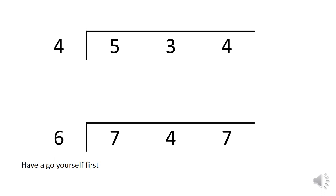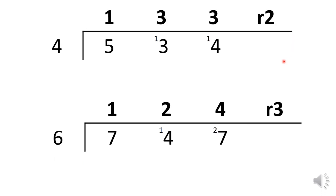Have a go at these two questions by yourself and take a pause in the video. Let's try this together. How many groups of four can I make out of five hundreds? I can make one complete group and have 100 left over, and this moves across to the tens column. I now have 13 tens. How many groups of four can I make out of 13 tens? I can make three groups of four and I have one ten left over, and this goes to the ones column.